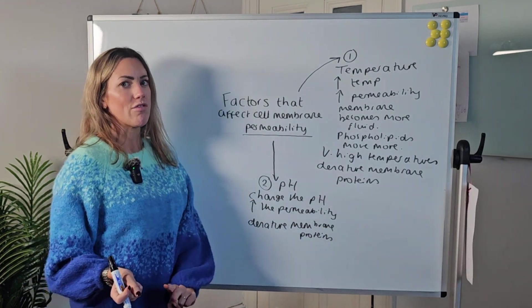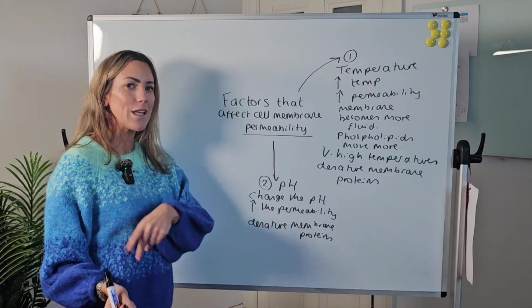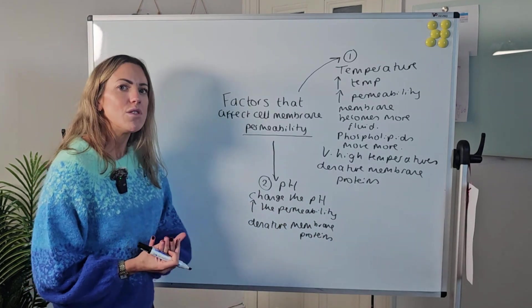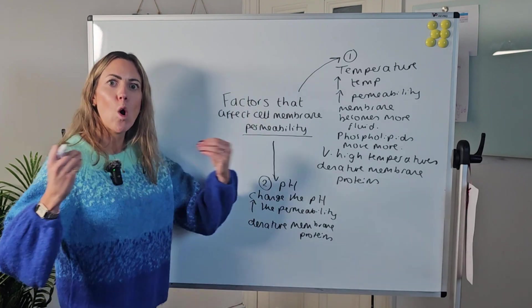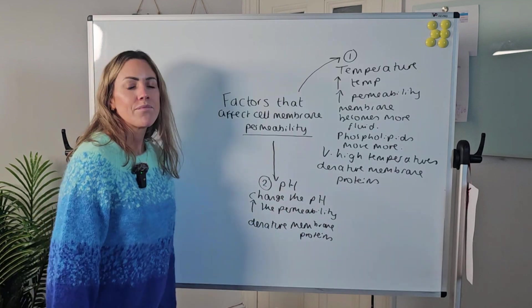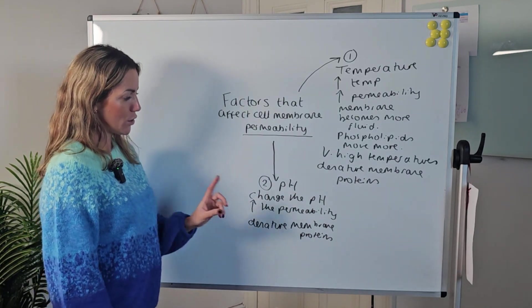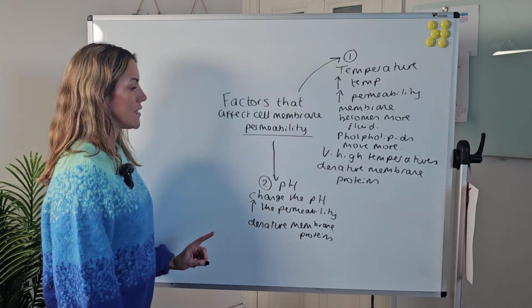You can link that to your beetroot practical. If you investigated pH, you probably saw that if the solution was really acidic, more pigment leaked out of the beetroot cells because the membrane became more permeable due to denaturing of proteins.